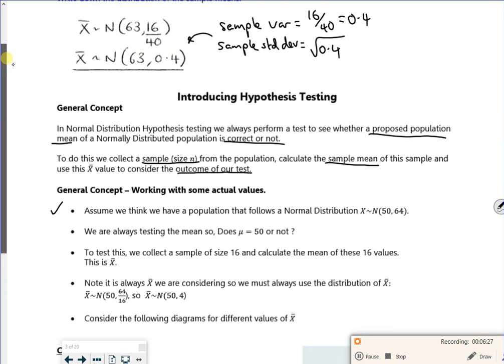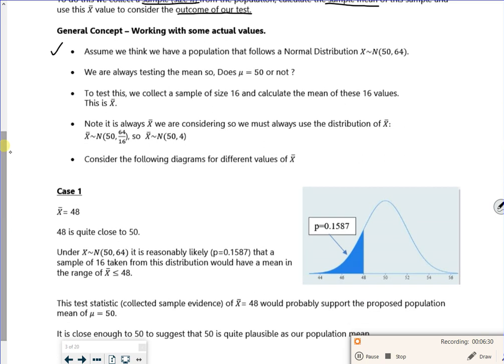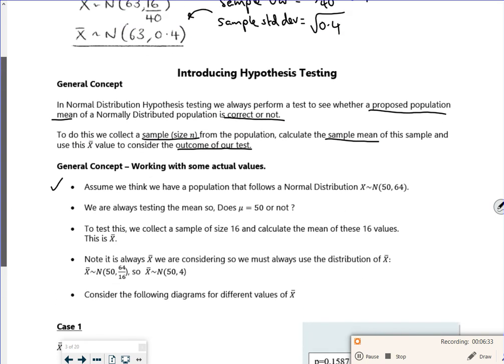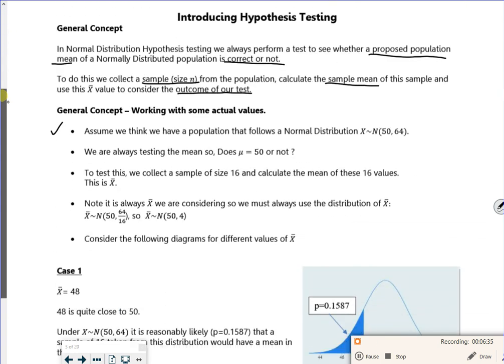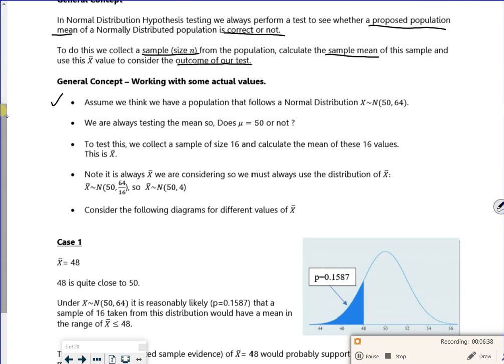The original distribution was 50 comma 64. We're seeing if the mean is 50 or not. We've got a sample size 16, so we work out x̄, so 64 over 16. You've got to remember my sample variance is 4, so my sample standard deviation is 2.